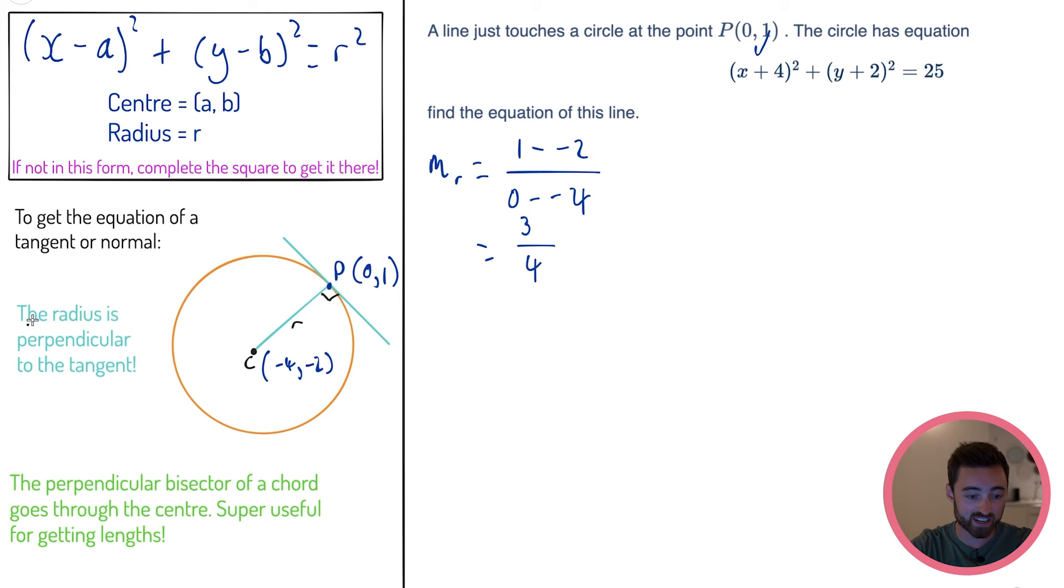But wait a minute - the radius is perpendicular to the tangent. So if you watched the last video, you would know that the perpendicular gradient is multiply by -1. So to get the gradient of this, I perp and flip it. It would be -4/3. Change the sign, flip the fraction. Now we're good - got the gradient, got the point, straight into the old trusty y - y₁ = m(x - x₁). So y - 1 = -4/3(x - 0). That is how to get the equation of a tangent.